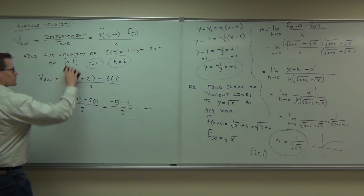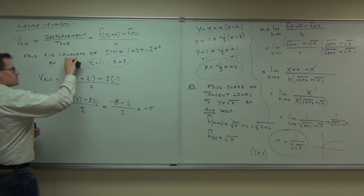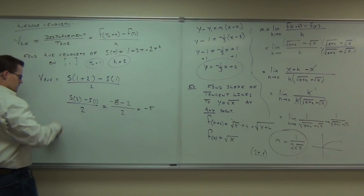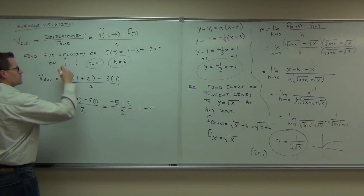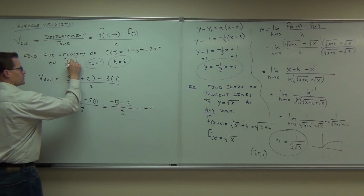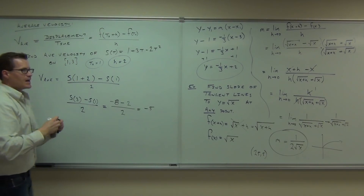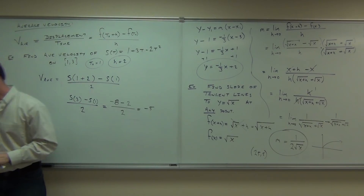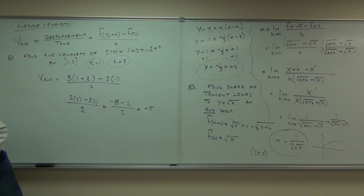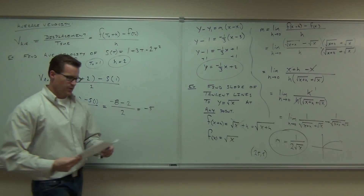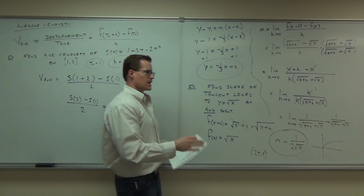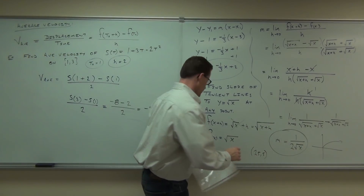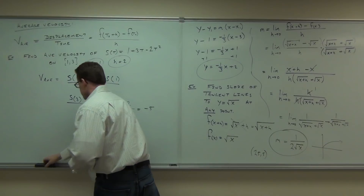This is our average velocity — we're not always going negative five, but on average we are from one point to the next. It's just slope, that's all it is. Now we're going to make the jump to instantaneous velocity.